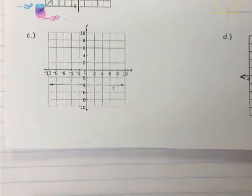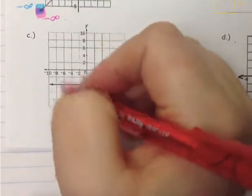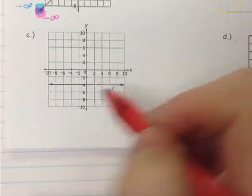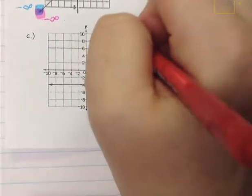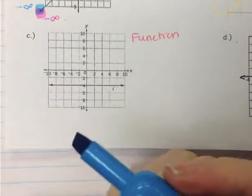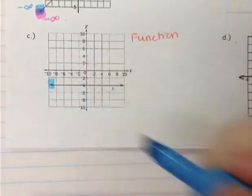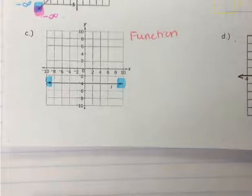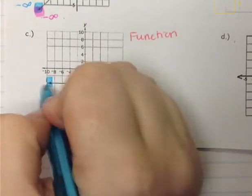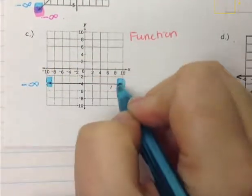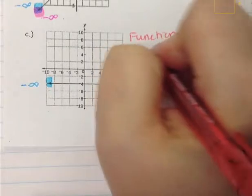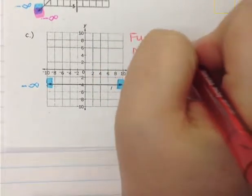On the next example, if I draw a vertical line anywhere along here, it will only cross this graph once — so this is a function. For the domain, the farthest left side is the arrow and the farthest right is also the arrow. I can go from blue to blue without picking up the pen, so it is a continuous graph. The left arrow is negative infinity, the right arrow is positive infinity. Our domain is open bracket, negative infinity, comma, positive infinity, open bracket.